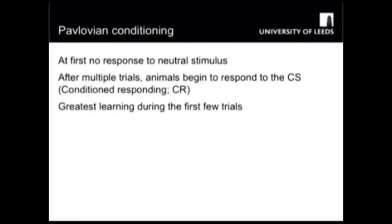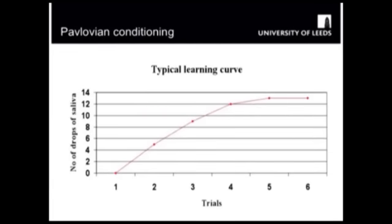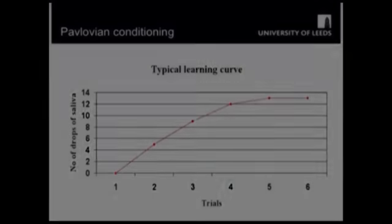The animal begins to change its behaviour during that CS — that previously neutral stimulus takes on some new meaning. The greatest learning occurs during the first few trials, and here you can see a typical learning curve. Initially, animals show no conditioned response, and then over time the conditioned response increases, with the greatest learning during the first few trials. Then learning reaches an asymptote, where the curve flattens off and no more learning is possible.